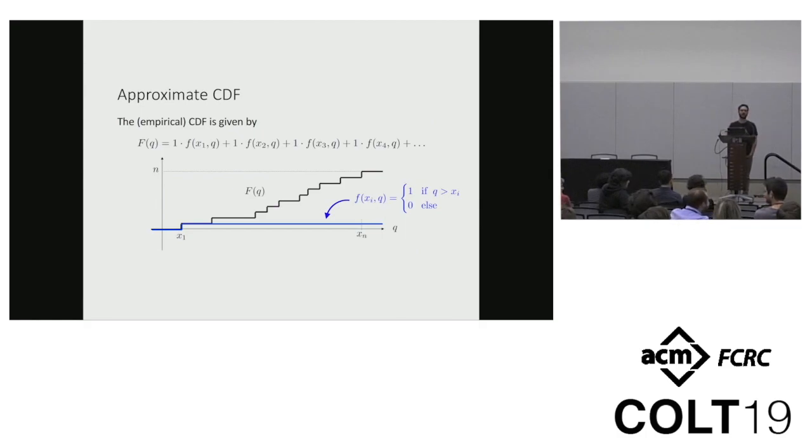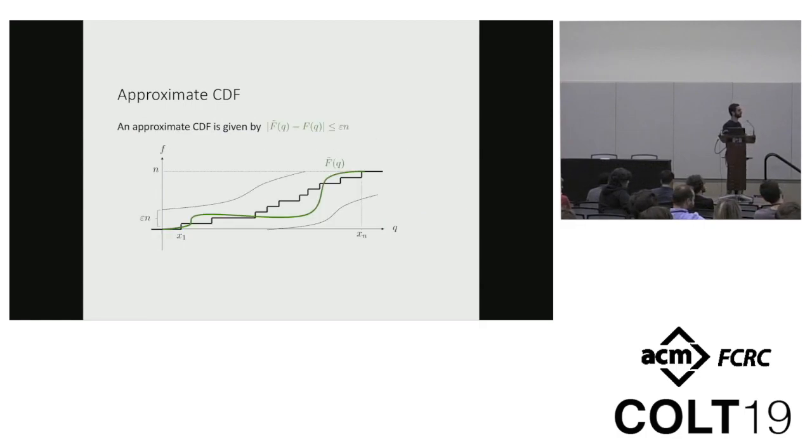So I'm going to start with an exercise to go through this, to construct something together. We're going to look at a very simple space, just numbers x1 to xn. And we're going to look at the function, it's just the sum of these step functions. So this gives you the cumulative distribution of those points, right? My function is just the sum of step functions where the step is at xi. And I want to approximate this. An epsilon approximation for this is any function that wiggles through between those two dotted lines, epsilon n away from the real function.